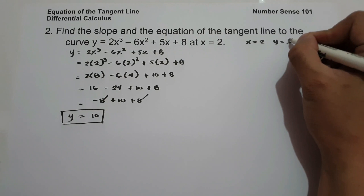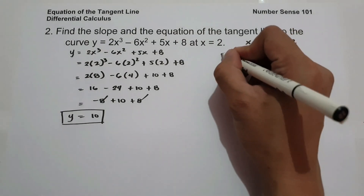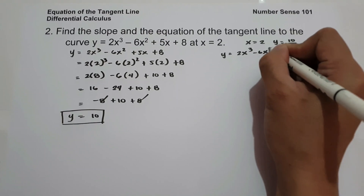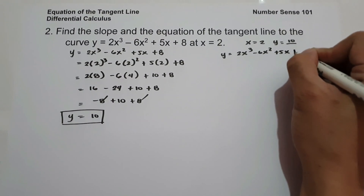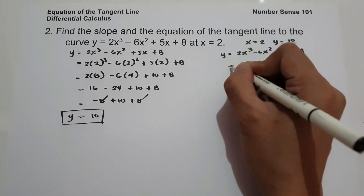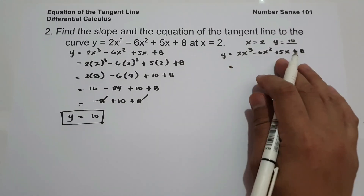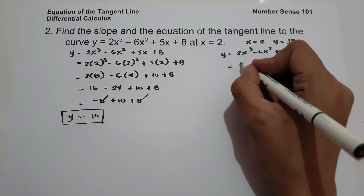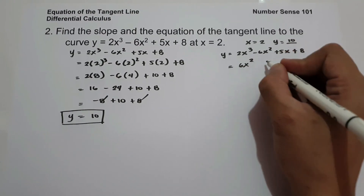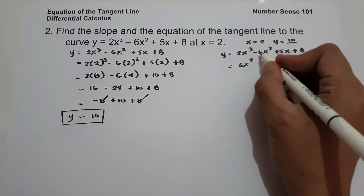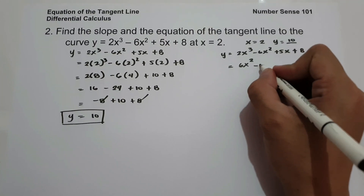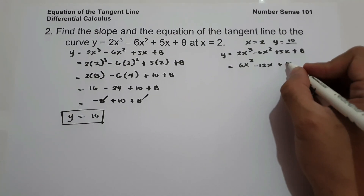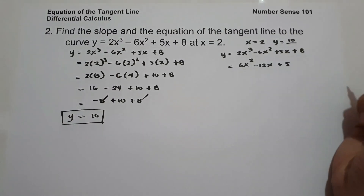Now let us find the slope by differentiating y equals 2x cubed minus 6x squared plus 5x plus 8. The derivative of 2x cubed is 2 times 3, which is 6x squared. The derivative of negative 6x squared is negative 12x. The derivative of 5x is 5, and the derivative of 8 is 0.